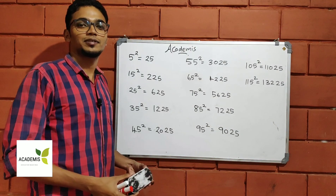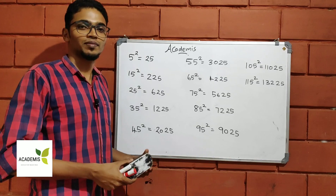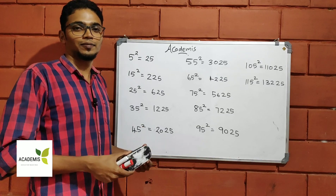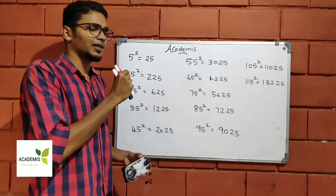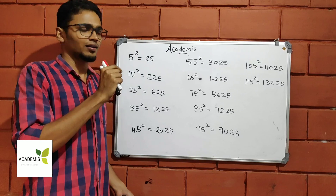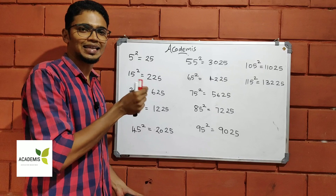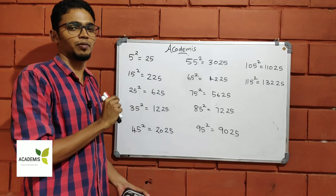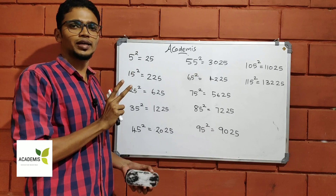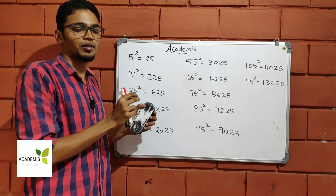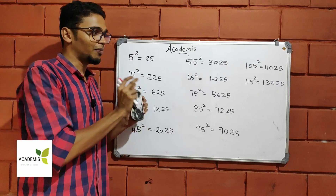Hi everyone! Welcome to the Academy's Day, welcome to the first online session. My name is Hansha. We are going to discuss a small calculation technique I have already done on the board. We are going to calculate the square of numbers ending in 5. It's a very simple but very powerful technique.